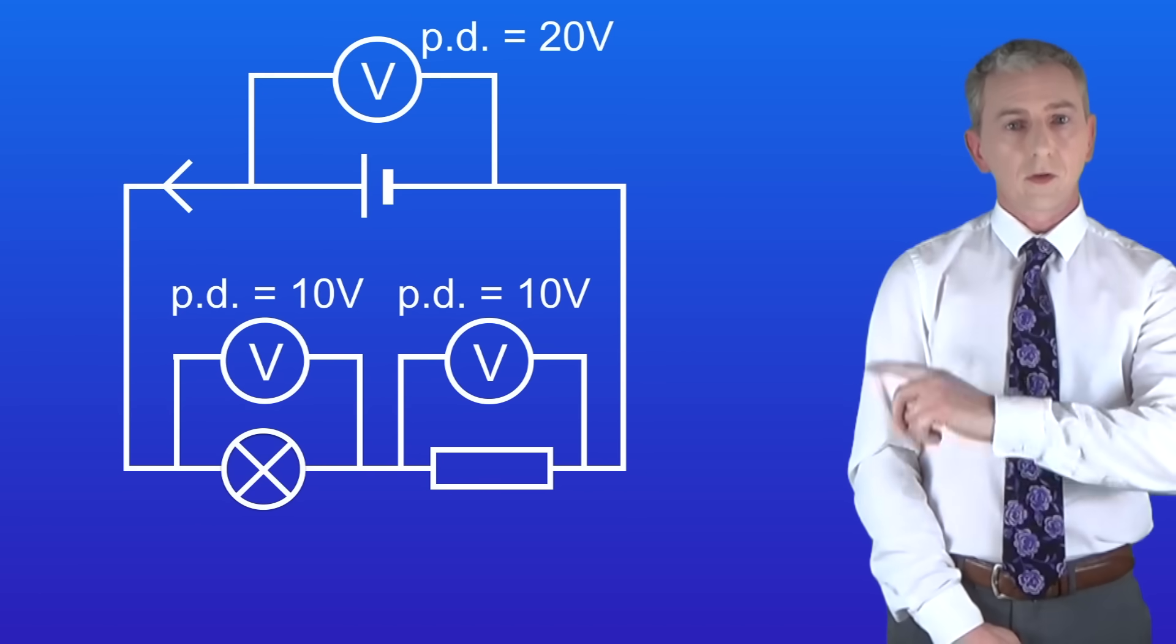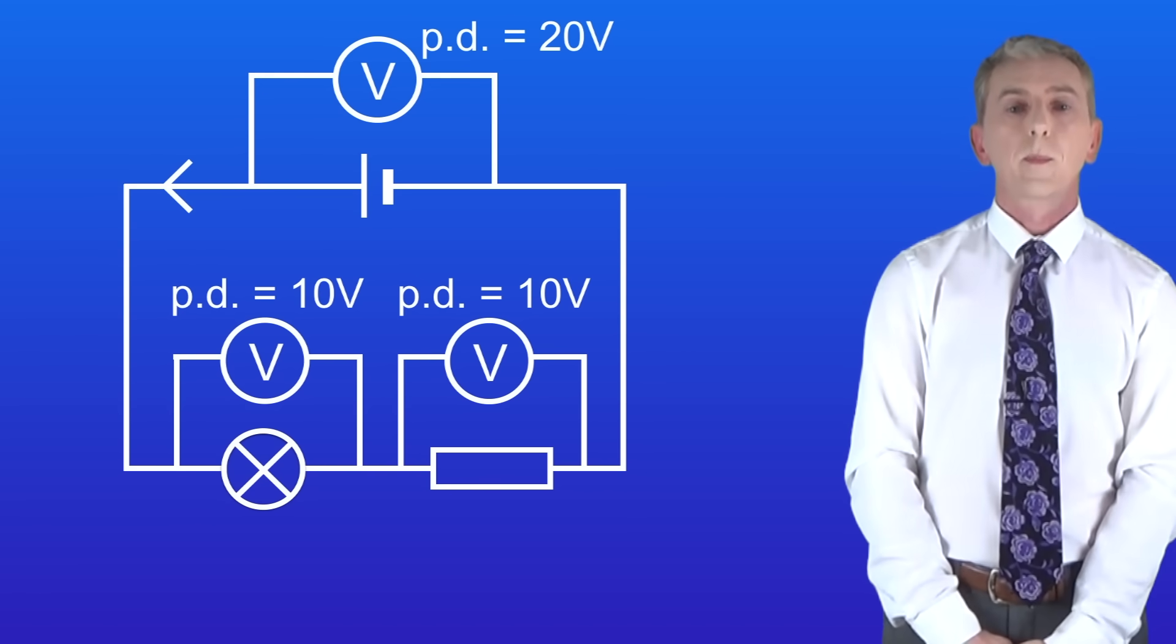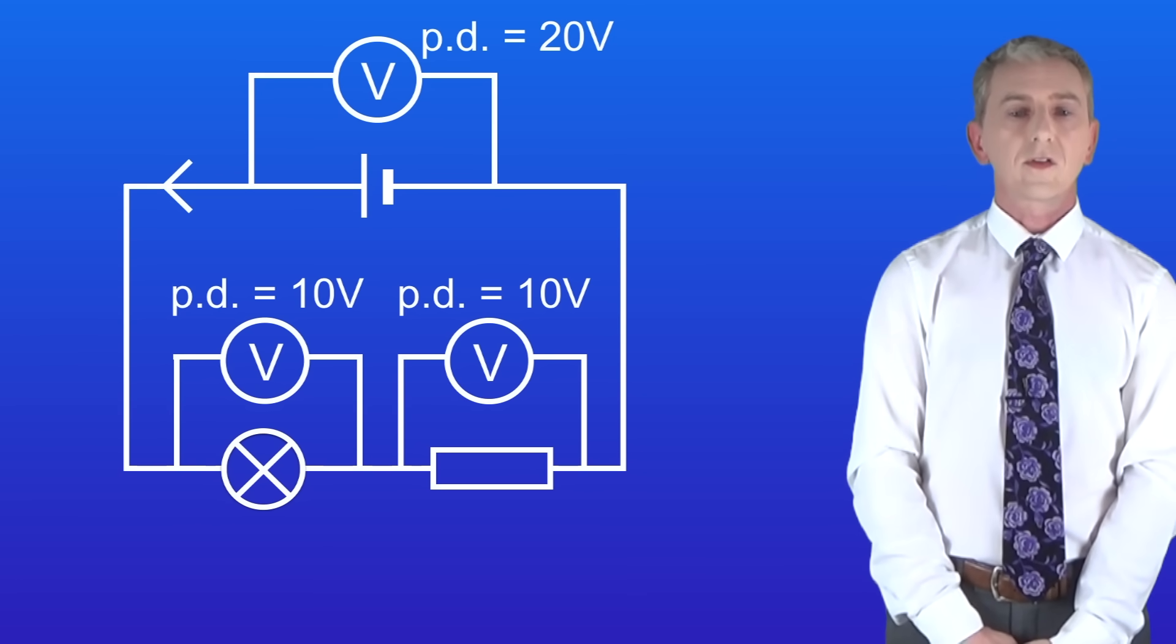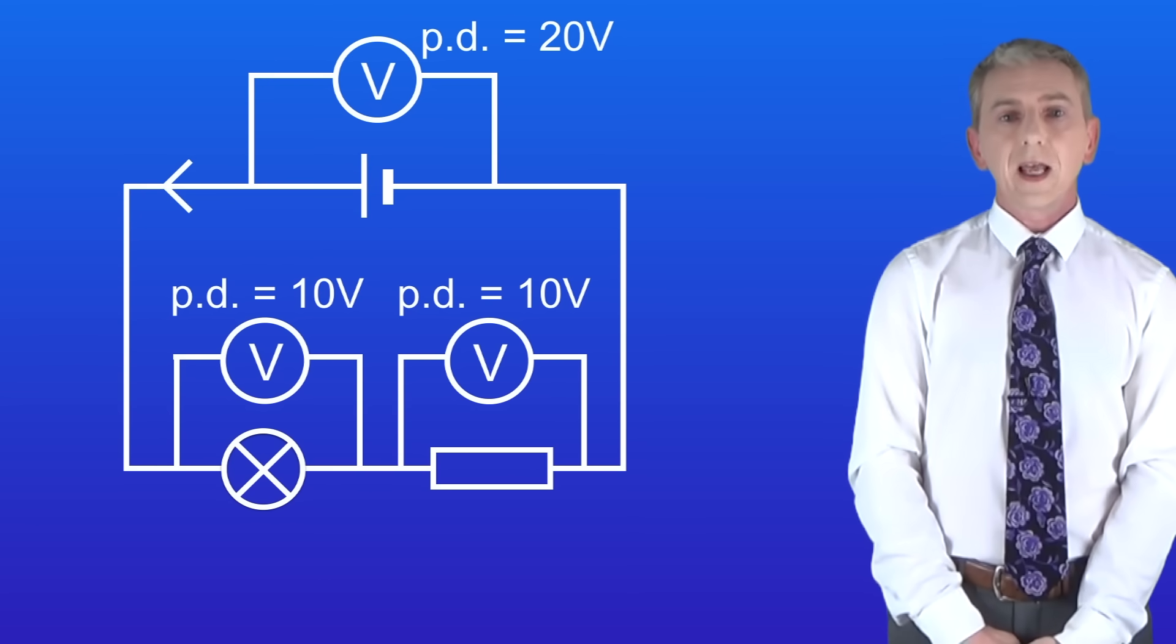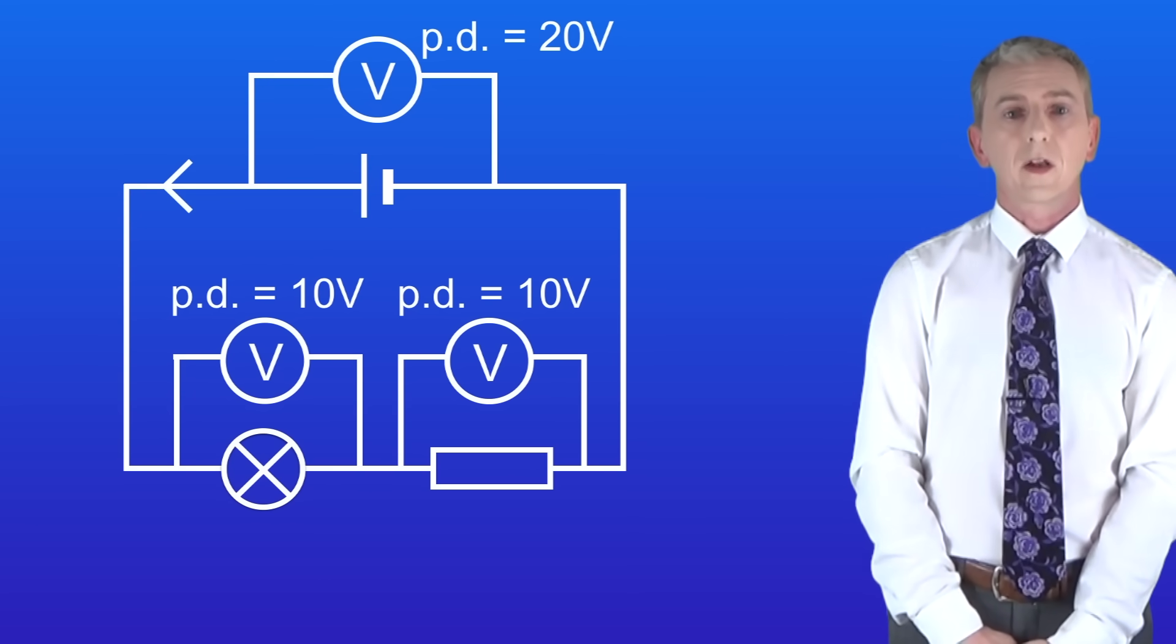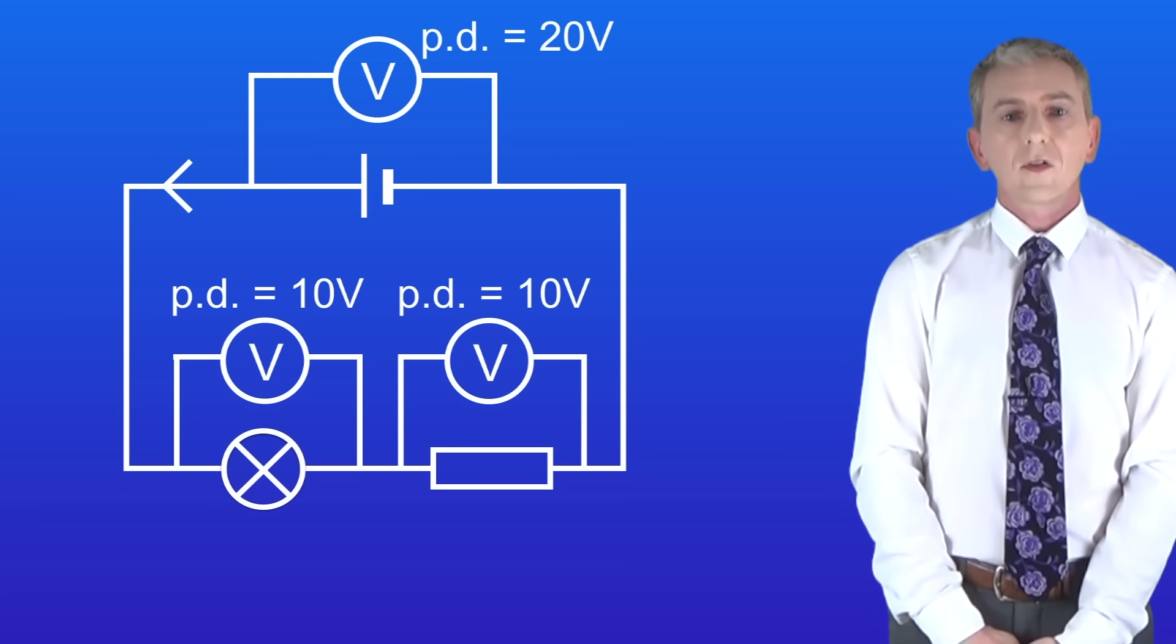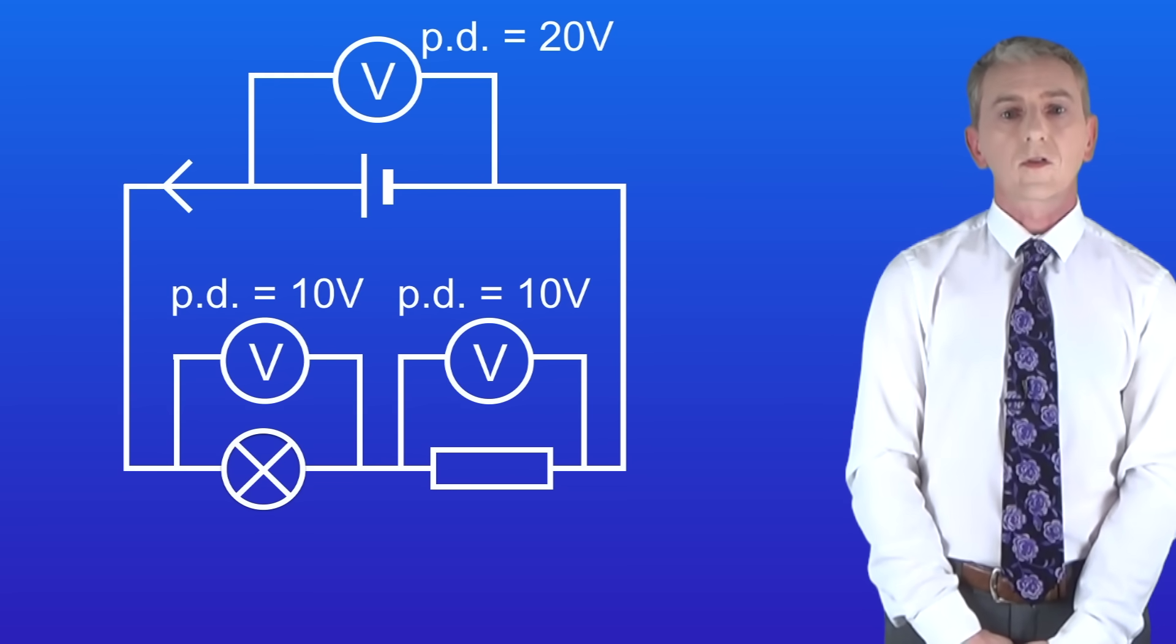So here I've added a resistor in series with the lamp. Now the potential difference is shared between the lamp and the resistor. This means that less electrical energy is transferred to the lamp so it's not as bright as before. So as you can see resistors can be very useful in circuits.